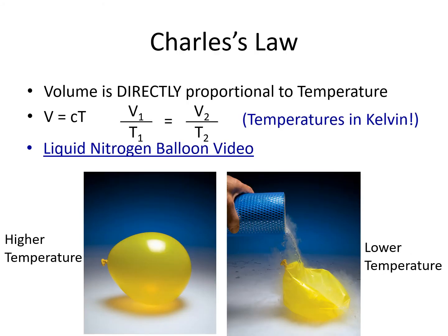Our second gas law is Charles' law. Charles' law tells us that volume and temperature are directly proportional to each other — so as volume goes up, temperature goes up, and so on. We could write it as a proportionality equation: volume is proportional to temperature. Or as an equality equation: volume equals some constant times temperature. This is true in a variety of circumstances, so V1 equals constant times T1 and V2 equals constant times T2. We rearrange and set them equal to each other to get V1 over T1 equals V2 over T2.